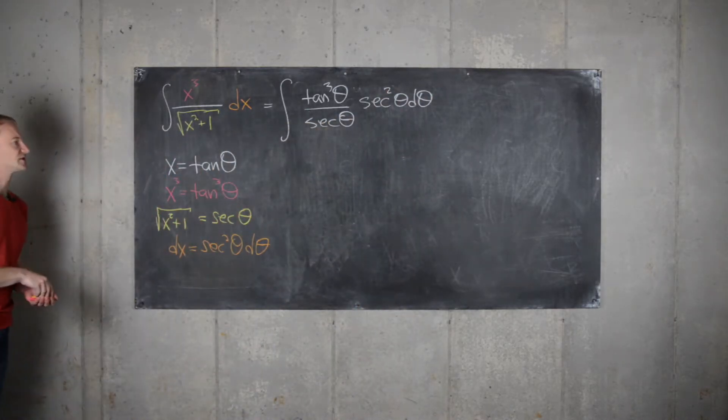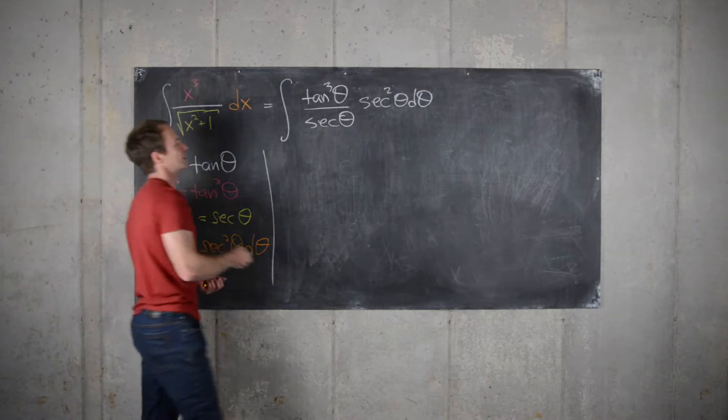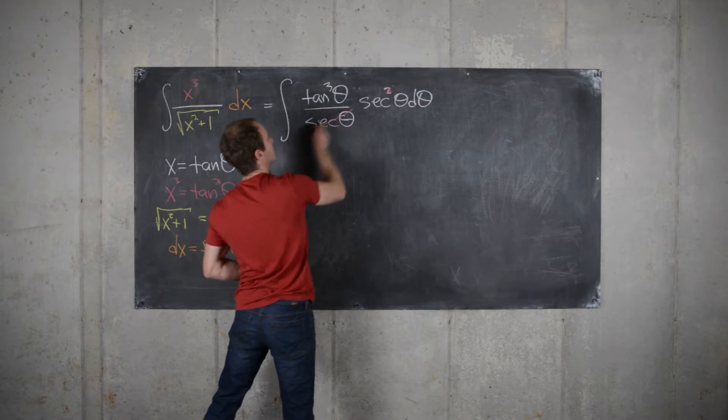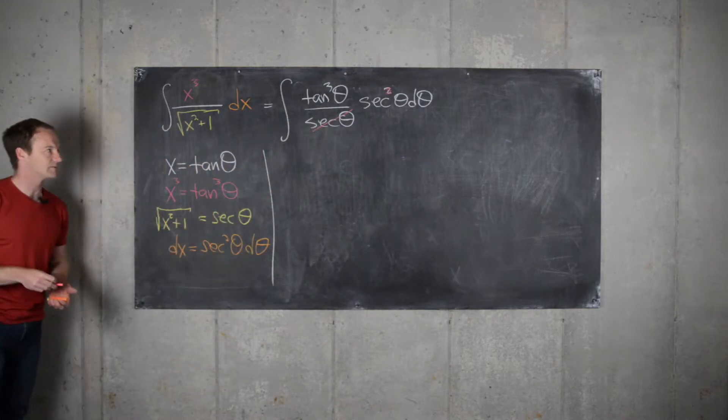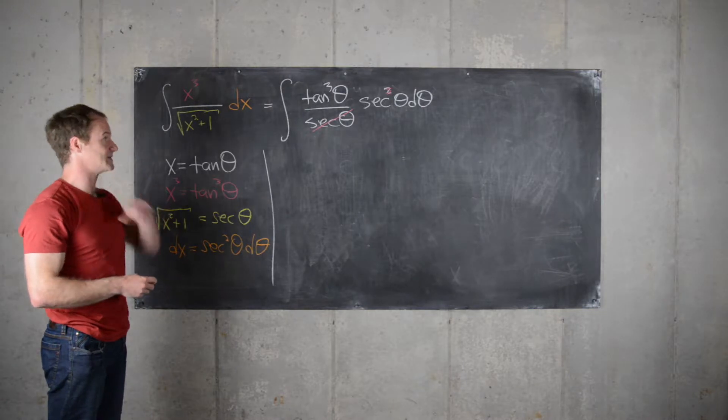Okay, so there's some obvious cancellation that can go on here. First, we can notice that we can get rid of this exponent by canceling out this secant in the bottom. And now we have something of the form tangent cubed theta times secant theta.